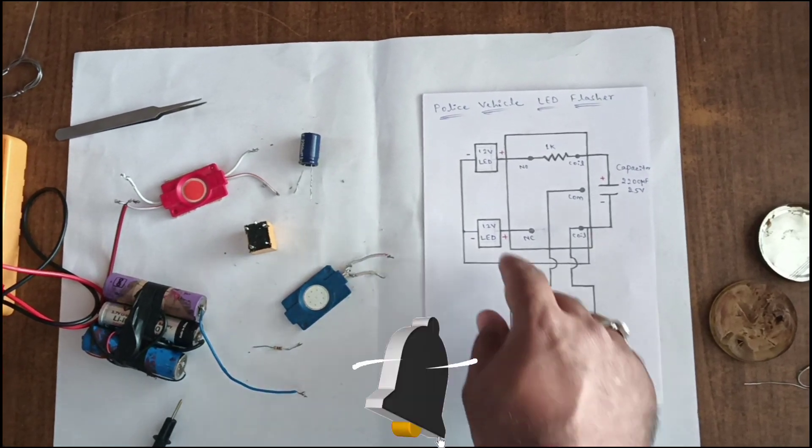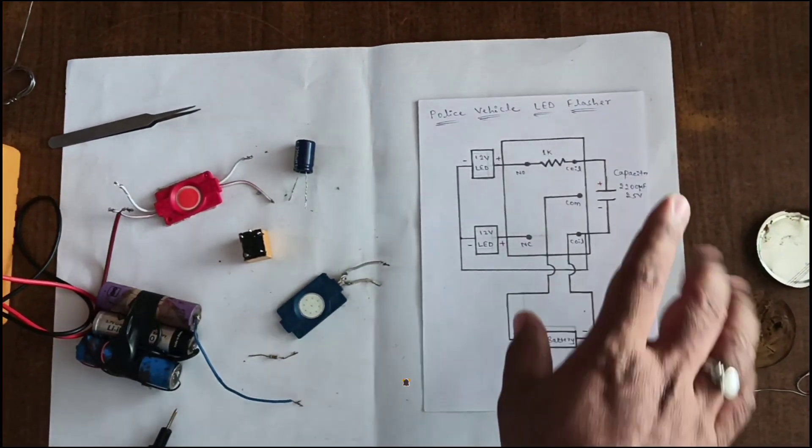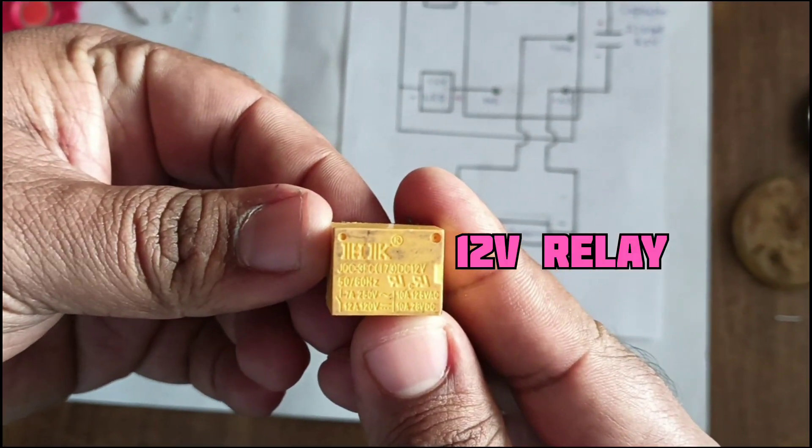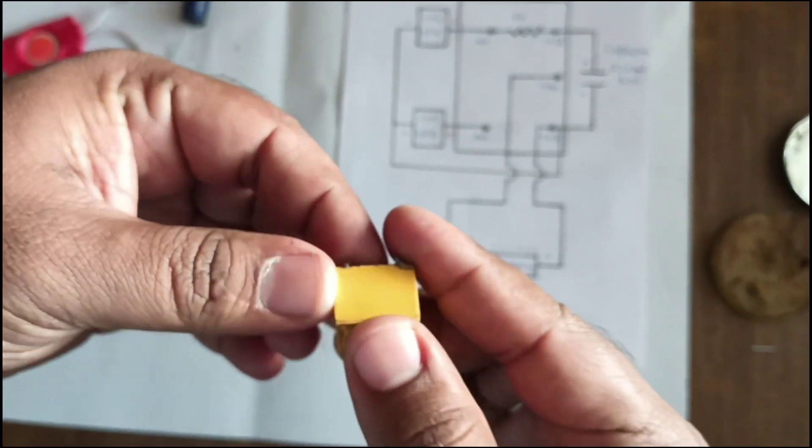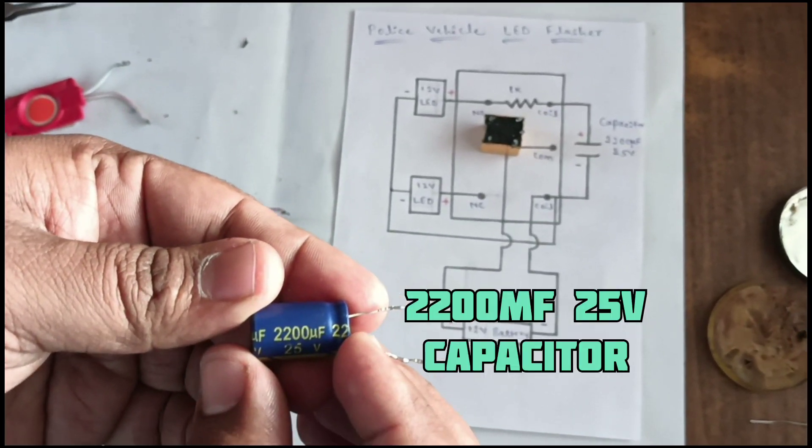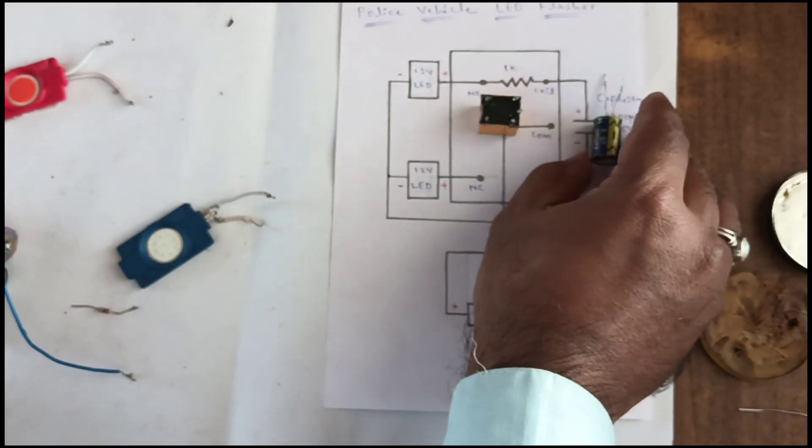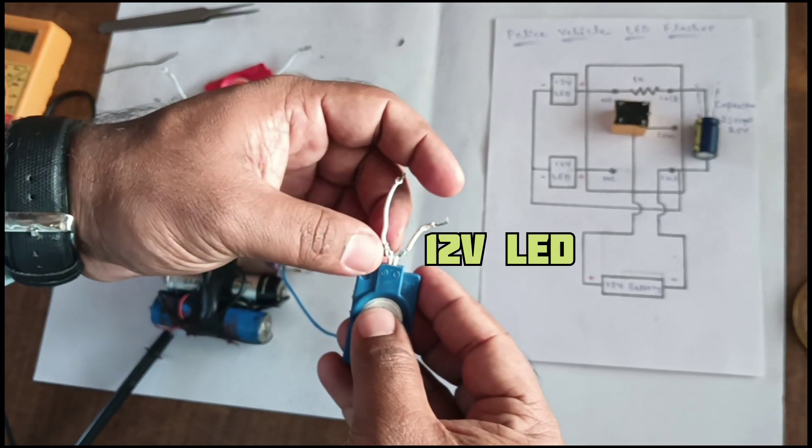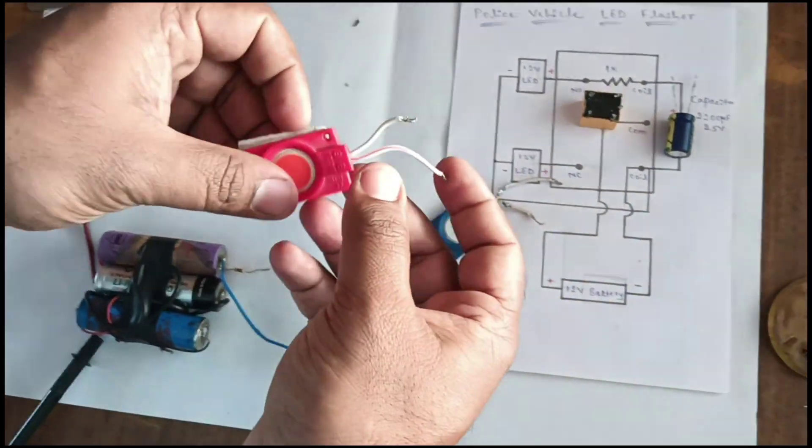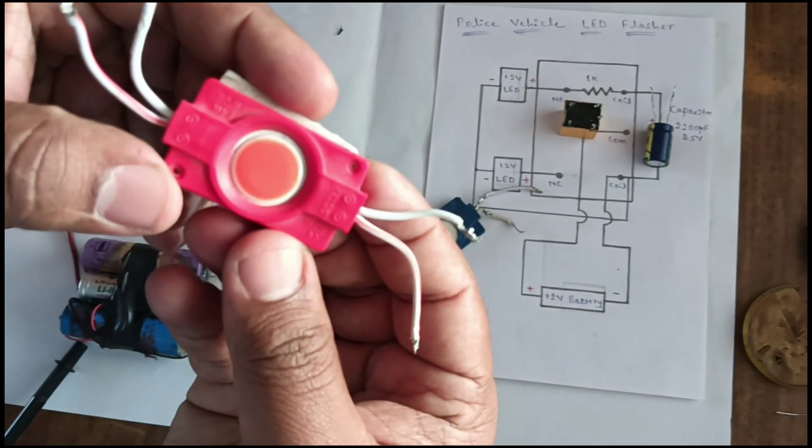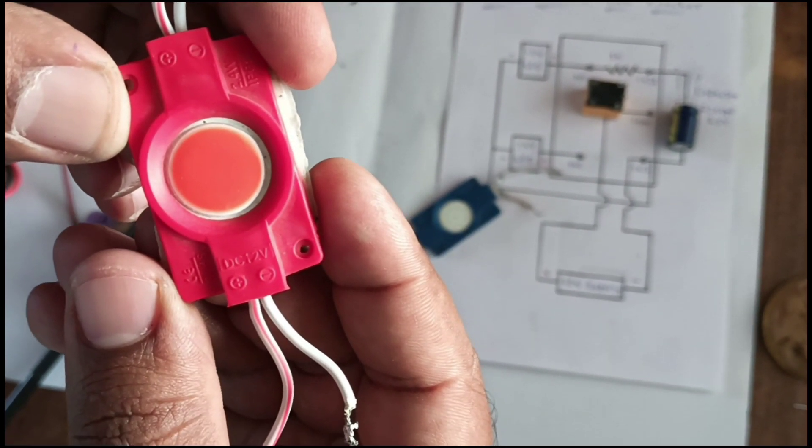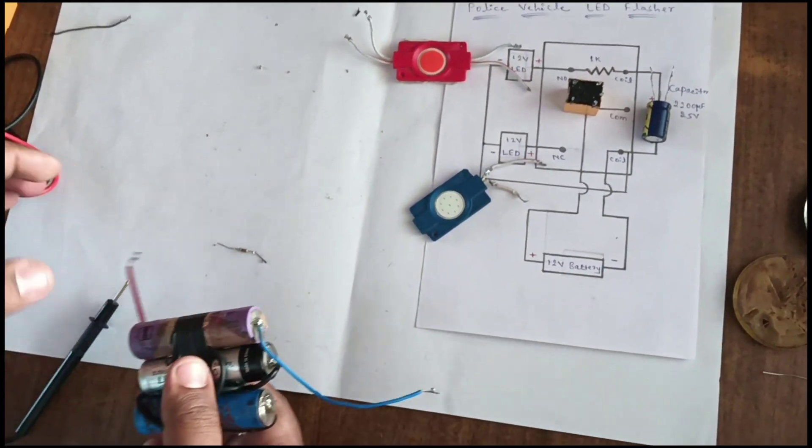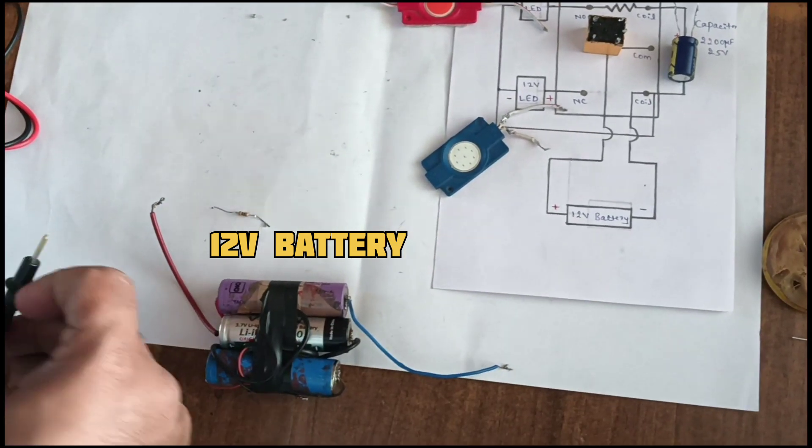Welcome to our channel. Police vehicle LED flasher. In this we use a 12 volt relay, this is the 12 volt relay. 2200 microfarad, 25 volt capacitor. Next is the 12 volt LED, and this one 12 volt LED. Two LEDs are used here and one 12 volt battery.